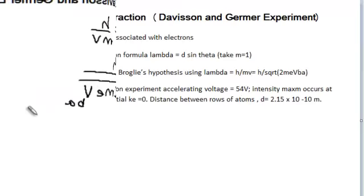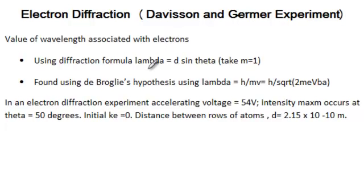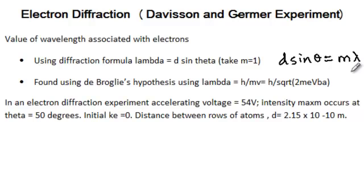Okay, now let's look at the value of wavelength associated with electrons. One using the diffraction formula, which is d sin theta equals m lambda and we are going to take the value of m as 1. And then we are going to use de Broglie's hypothesis, which gives us lambda equal to h over p. And we will write that as square root of 2m e vba, which is the potential difference through which the electrons are being accelerated.